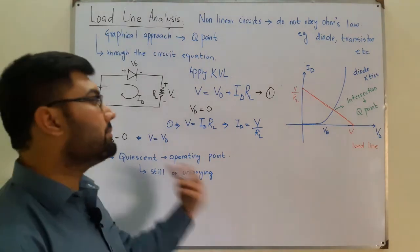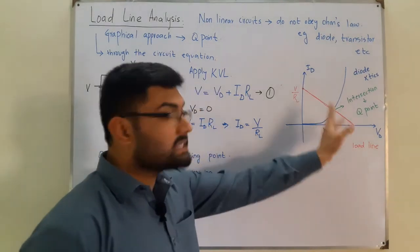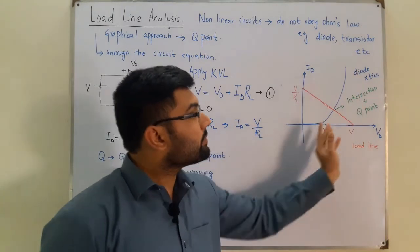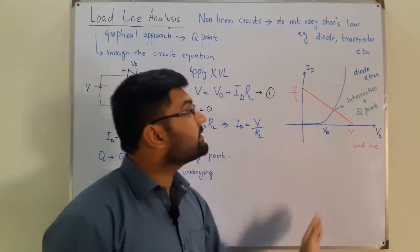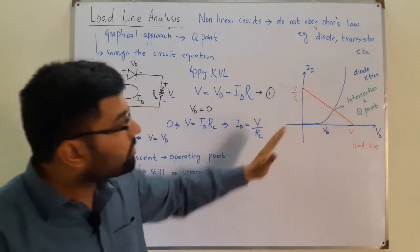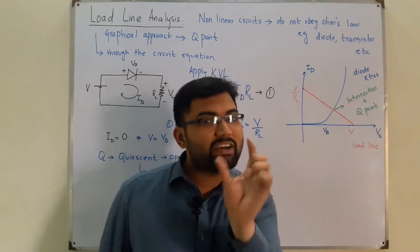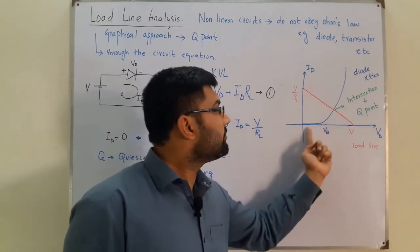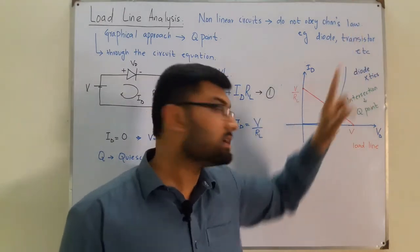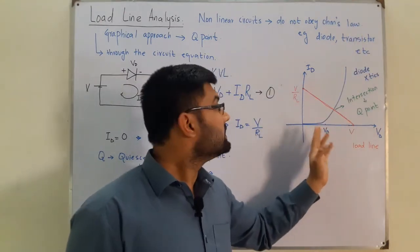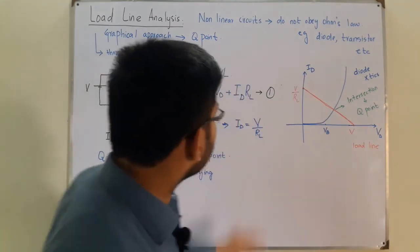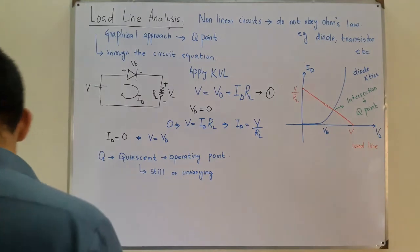Physically, the Q point represents the safe and stable point of operation of the diode. Above it, a small change in VD causes a rapid rise in current ID. Below it, a large change in V produces only a very small change in ID. So the Q point is where the device operates stably.